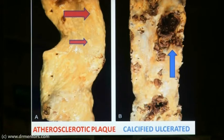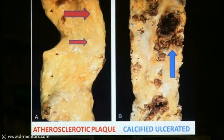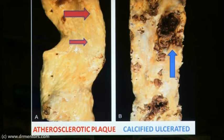Atherosclerosis is not only intracellular accumulation — it is associated with both intracellular as well as extracellular accumulation, which we will see in the microscopic slides. The complications of atherosclerosis include calcification, ulceration, thrombosis, aneurysm, and hemorrhage. Now we will have a look at the microscopy.